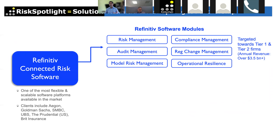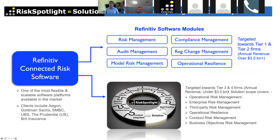Refinitiv created their own risk management, audit management, and compliance management software modules, which they typically sell to tier one and tier two customers — firms with revenues above $3.5 billion. Last year we were appointed as their reseller for the tier three and tier four market, taking the same platform sold to tier one banks and building our own risk management expertise geared toward smaller firms.